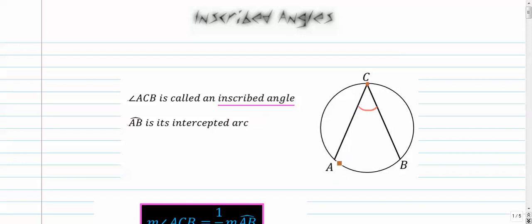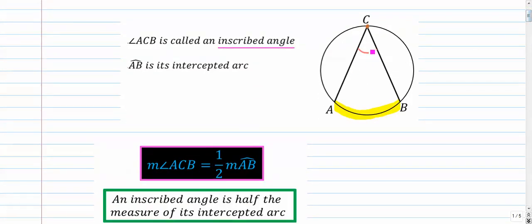We still call this the intercepted arc. AB is still the intercepted arc. But this time, they're not the same. If you think back to the rule for central angles, these are the same. But now they're not. And the rule is that the angle is half as big as the arc. The inscribed angle is half as big as the arc it opens up to.